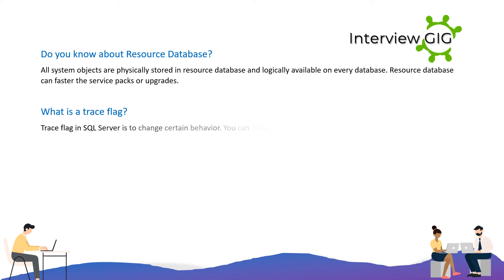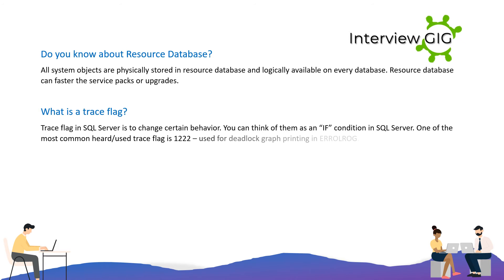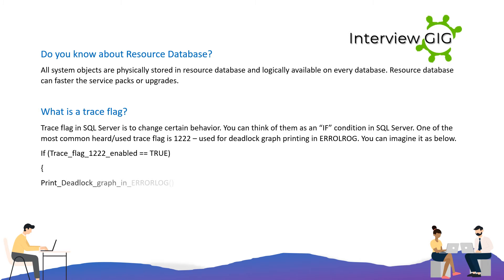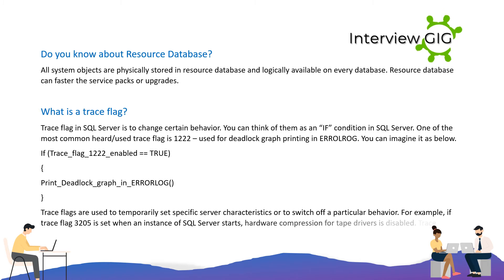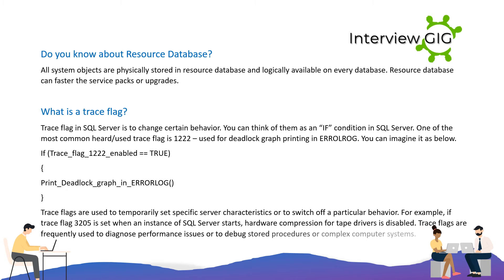A trace flag in SQL Server is used to change certain server behavior — think of it as an if-condition. One of the most commonly used trace flags is 1222, used for deadlock graph printing in the error log. Trace flags are used to temporarily set specific server characteristics or switch off particular behaviors. For example, trace flag 3205 disables hardware compression for tape drivers. Trace flags are frequently used to diagnose performance issues or debug stored procedures.